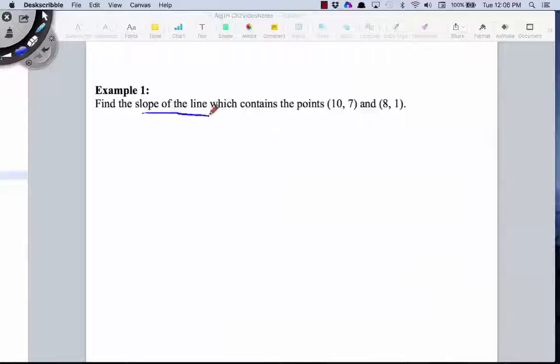In example one, we're asked to find the slope of a line which contains or passes through the points (10, 7) and (8, 1). Now a few years ago, you learned the equation for calculating the slope of the line through two points. You learned something like this, y2 minus y1 divided by x2 minus x1.